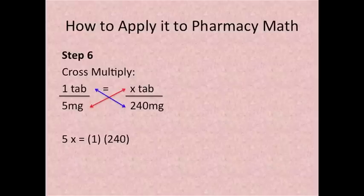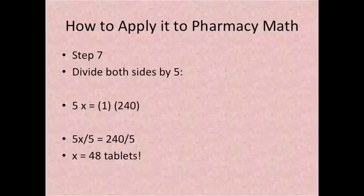Step 6. Cross multiply. So you have 5 times x is equal to 1 times 240 which would be 5x is equal to 240.